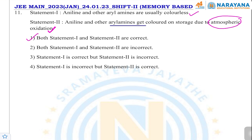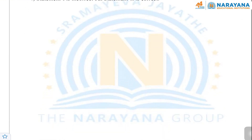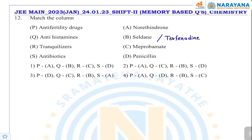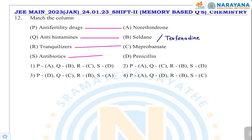Drug classifications directly from NCERT: anti-fertility drug — norethindrone; antihistamine — seldane or terfenadine; tranquilizer — meprobamate; antibiotic — penicillin. Direct question from NCERT.